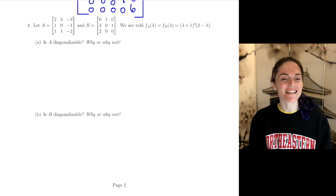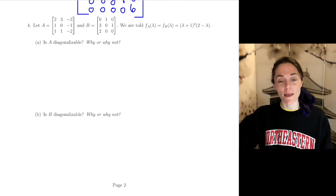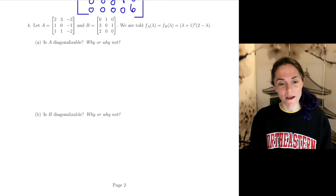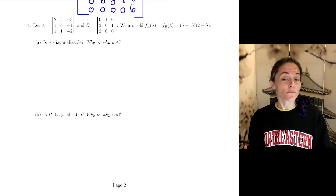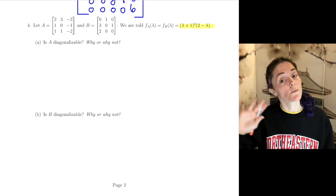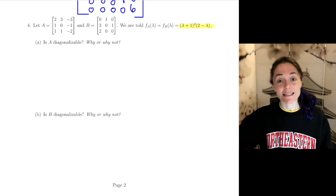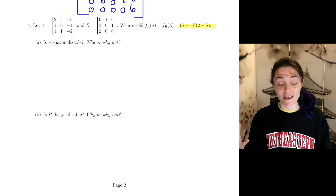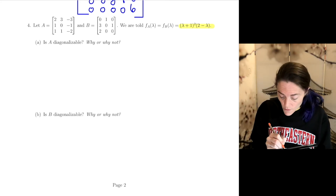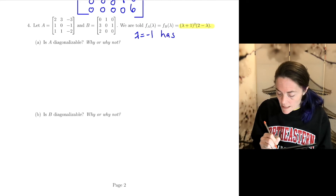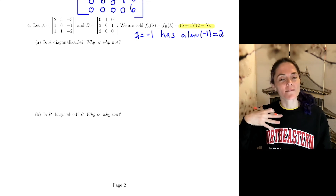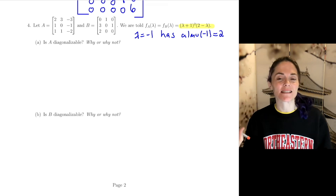Number four is the last question, and I love this problem. We're told A and B are two different 3 by 3 matrices with the exact same characteristic polynomial. We want to figure out whether A and B are each diagonalizable. Lambda equals 2 has algebraic multiplicity 1, so necessarily geometric multiplicity 1 — we can disregard it. Everything comes down to lambda equals minus 1, which has algebraic multiplicity 2. The answer is yes for diagonalizability if and only if the geometric multiplicity of minus 1 is also 2.